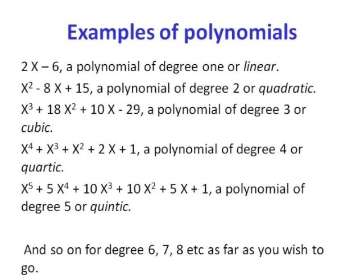Examples of polynomials: 2x minus 6 is a polynomial of degree 1 or linear; x squared minus 8x plus 15 is degree 2 or quadratic; x cubed plus 18x squared plus 10x minus 29 is degree 3 or cubic; x to the 4th plus x cubed plus x squared plus 2x plus 1 is degree 4 or quartic; and x to the 5th plus 5x to the 4th plus 10x cubed plus 10x squared plus 5x plus 1 is degree 5 or quintic.